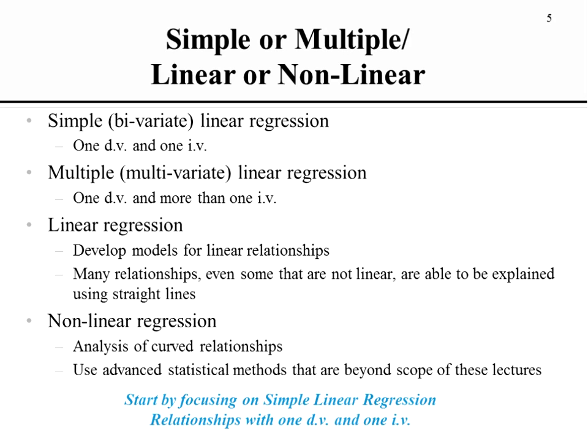Simple linear regression means we have our dependent variable but we're only going to look at one single independent variable, giving us two variables total. In multiple linear regression, we'll have one dependent variable and three, four, or two independent variables influencing it at the same time — and we can ask which of those independent variables have more or less influence on the dependent variable.